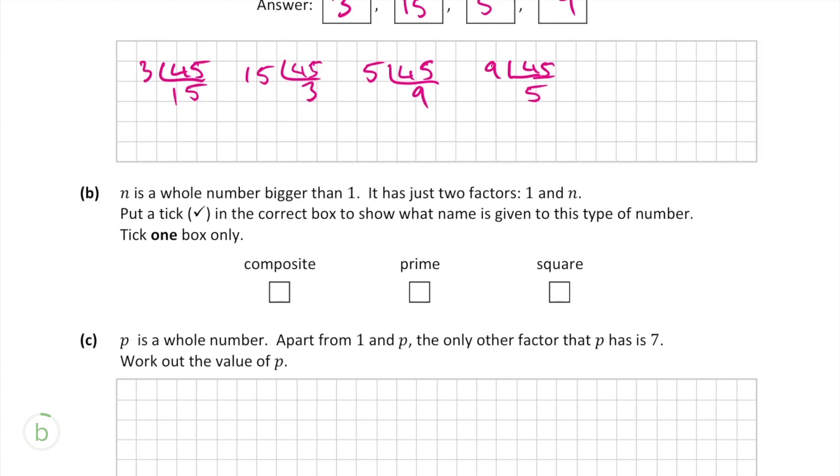In part b, we're told that n is a whole number bigger than 1, which has just 2 factors, 1 and n. We have to tick whether this is a composite, prime, or square number. In this case it's prime, because the definition of a prime number is a number that can only be divided by itself and 1.